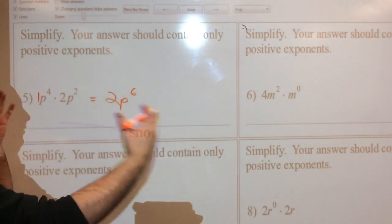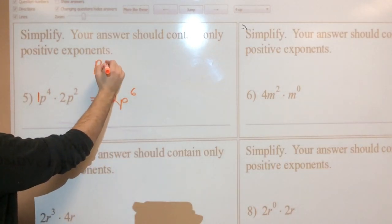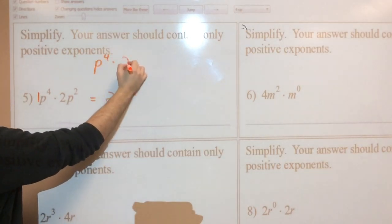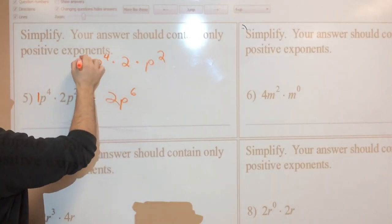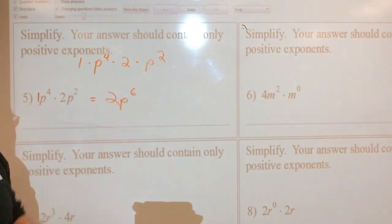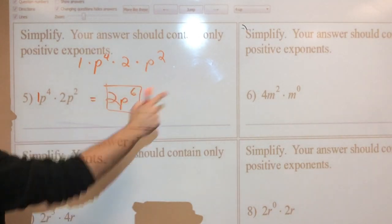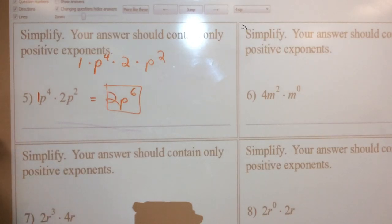Another way to look at this is break everything apart into its parts that you know. This is P to the 4th times 2 times P to the 2nd. This is really a times 1 in front too. And then put them back together with multiplying the things that are alike. Go ahead and try that one because you can see it. I'll work on this one. Multiply the outer numbers together, and I get 8. And then I have R to the 3rd times R to the 1st. I'm adding those exponents. It's R to the 4th.